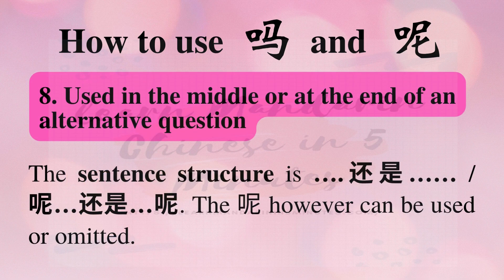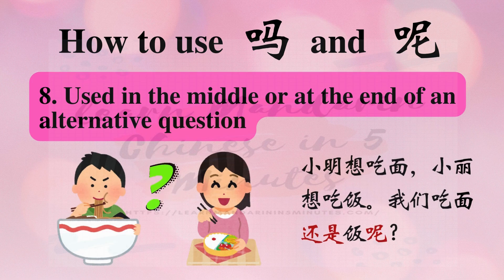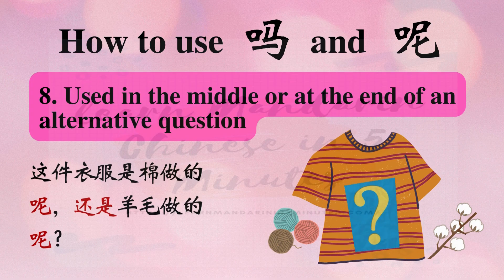Number eight: 呢 is used in the middle or at the end of an alternative question. The sentence structure is: something + 还是 + something + 呢? The 呢 can also be omitted. For example: 小明想吃面，小力想吃饭，我们吃面还是饭呢? Another example: 这件衣服是棉做的呢，还是羊毛做的呢?